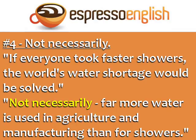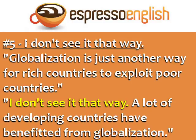Phrase number four: 'Not necessarily.' This phrase is often used when the statement doesn't present the entire picture. For example, if someone says 'If everyone took faster showers, the world's water shortage would be solved,' you can disagree and say: 'Not necessarily — far more water is used in agriculture and manufacturing than for showers.'